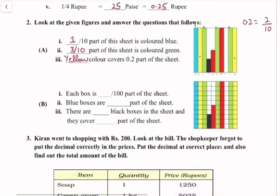Next, each box is 1 by 100 part of the sheet. We have to find the blue boxes. Counting: 1, 2, 3, 4, 5, 6, 7, 8, 9, 10. So blue boxes are 10 out of 100, or 1 out of 10 part of the sheet.